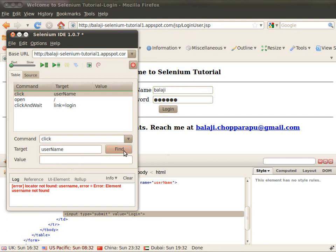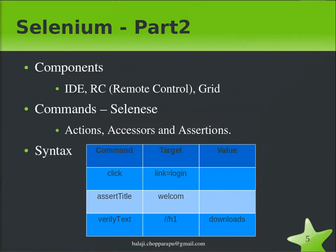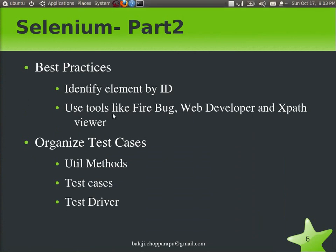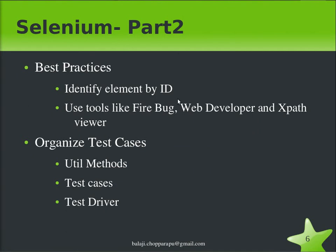What are the best practices while automating Selenium test cases? In most cases you need to identify elements by their ID. Have static IDs for each and every element and identify elements by their ID — this is one of the best approaches. If you have dynamic IDs, you can use XPath identifiers or tools like Firebug, Web Developer, and XPath Viewer, which will help you identify elements in the HTML.